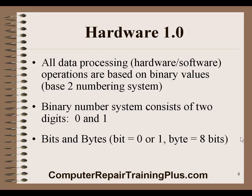All data processing, hardware and software operations are based on binary values. The information and processes running through the computer are in the form of zeros and ones — we call this the binary numbering system. It's a base-two system, meaning there are only two digits: a zero or a one. We have bits, which is either a zero or a one, and a byte, which is eight bits. These are important terms to understand. It's pretty amazing that just ones and zeros allow us to do all the things we do, because the computer runs so fast and processes so many of them.